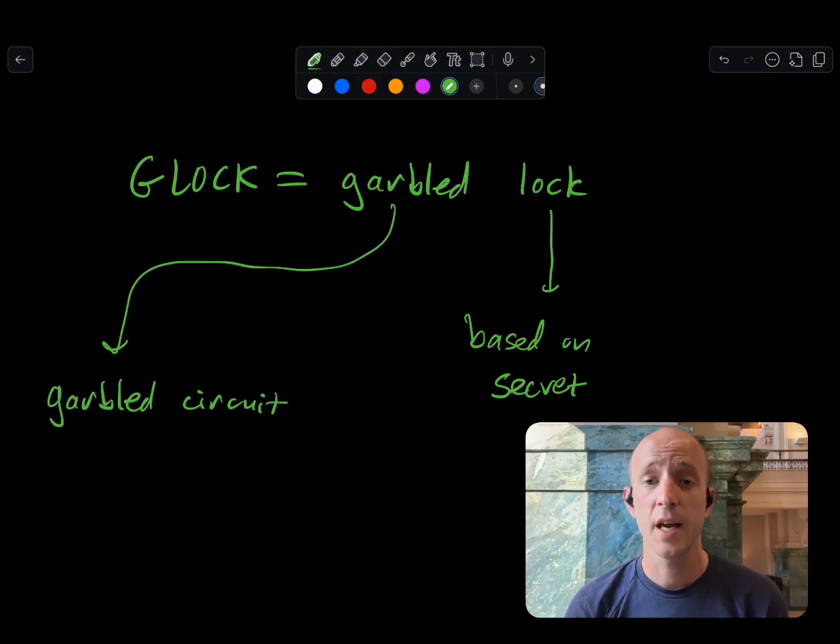So, we call this design Glock, which we said stood for Garbled Lock. We'll go into more detail about why we call it this and some of the technical details in later videos. But for now, know that each of these words means something important. Garbled means garbled circuit. It's a cryptographic primitive that's been around since the 1980s. And the idea is that we can execute computation and conditionally disclose a secret based on the result of that computation.